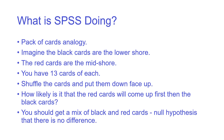Another way to think about it is a pack of cards analogy. Imagine the black cards represent the lower shore and the red cards the mid shore — 13 cards each. If you shuffle and lay them face up, how likely is it that all 13 red cards come up first and then all 13 black cards? Instead of card order, you're arranging by size. If the groups are genuinely different, you'll get a preponderance of one group at the small end and the other at the large end; if not, the groups will be mixed throughout.